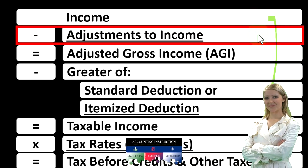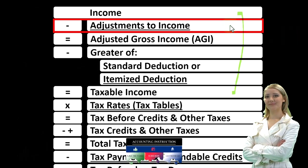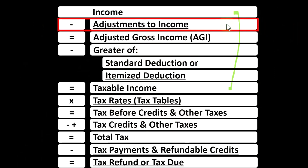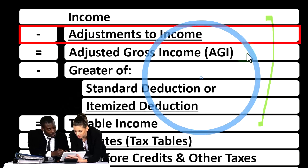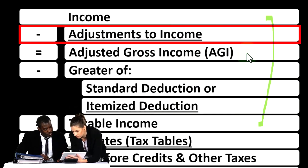Remember that this line can be called the adjustments to income — you might call it above-the-line deductions or Schedule 1 deductions. In other words, you might characterize it as a deduction or basically like a contra income account, because it's going to take the income line minus these adjustments to income to get down to the subtotal of the adjusted gross income, or the AGI.